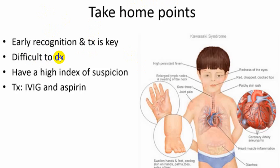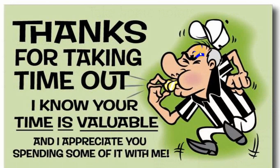Take-home points: early recognition and early treatment are absolutely necessary. Although it is difficult to diagnose, if you have a high index of suspicion you will pick it up as early as possible. The best treatment is early starting of aspirin and IV immunoglobulins to prevent complications. Always remember CREAM or CRASH — these are the five clues, and at least four should be present with persistent fever to suspect Kawasaki. Investigate properly, diagnose early, and treat early.